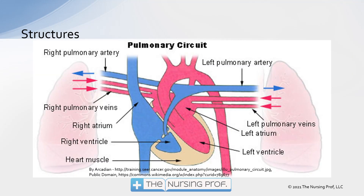We're going to have to do the coughing, the deep breathing, the ambulation, and all those other respiratory interventions in order to make sure that we're moving that stuff along. Taking a look at the pulmonary vasculature, here's the heart in the middle and we have our lungs on either side. The right side of the heart is pumping to the pulmonary artery, which is taking unoxygenated blood to the lungs to become oxygenated, back through the pulmonary veins back to the left side of the heart. So we also have the vasculature as part of our structures.